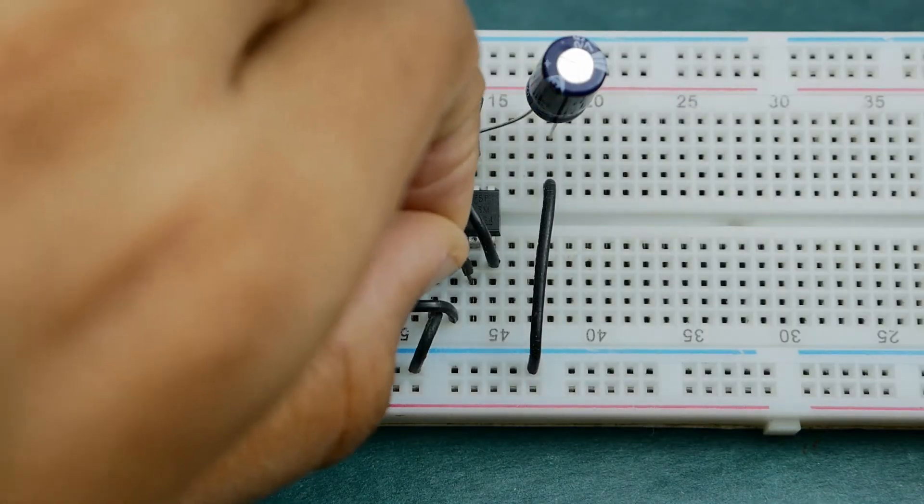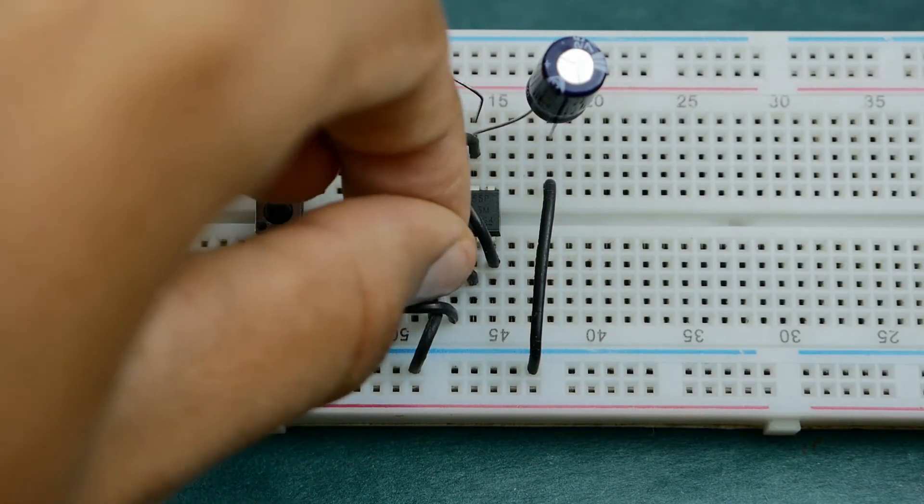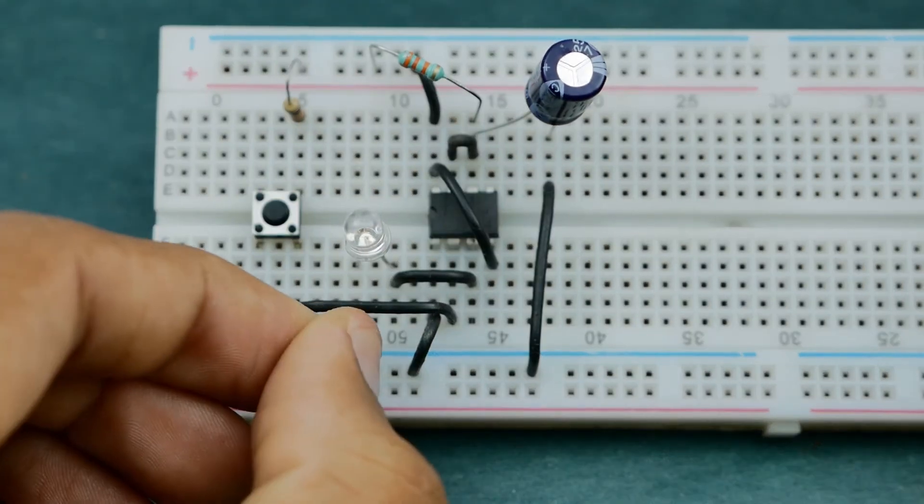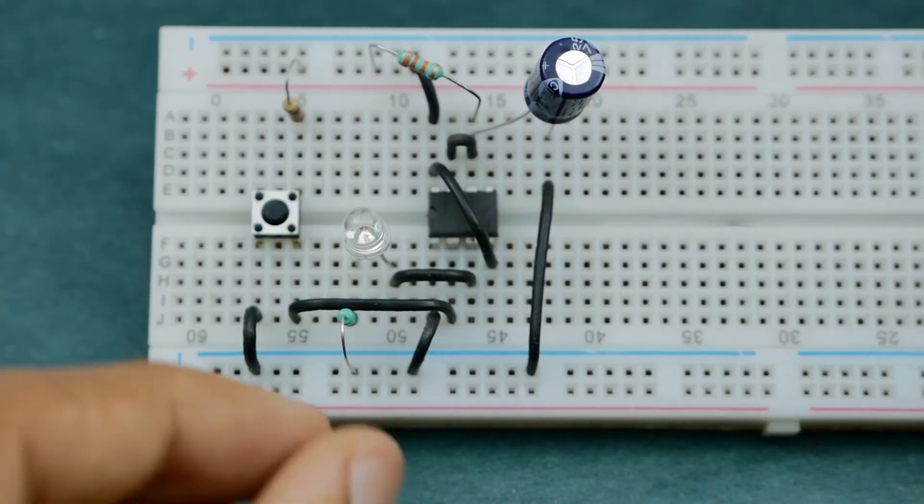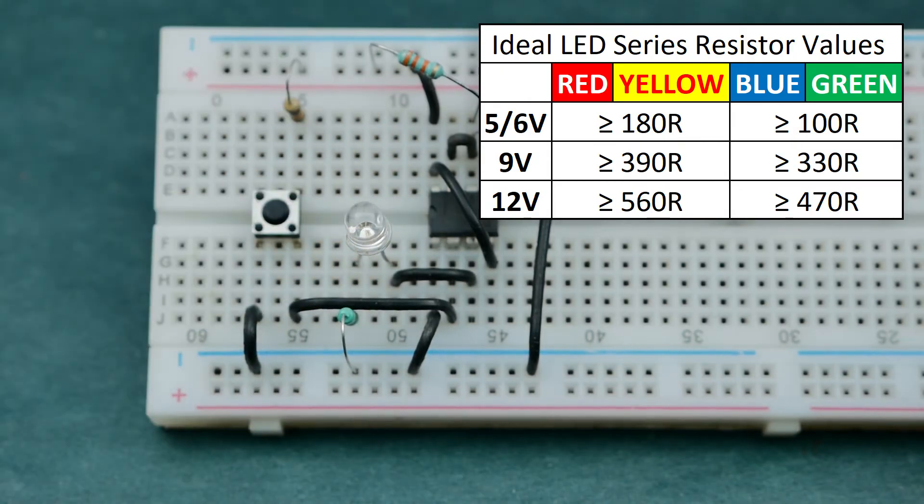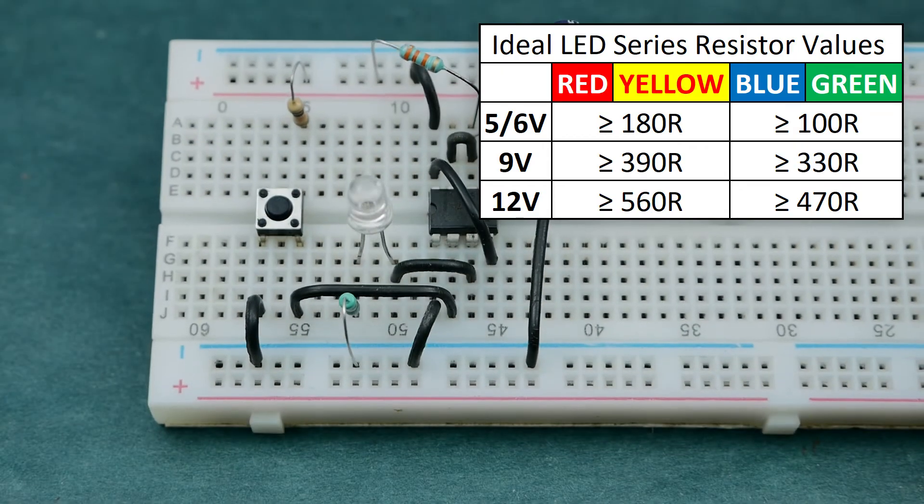Now extend pin 3 of the 555 timer IC, connect anode of the LED to this extended row and cathode to the negative rail via a 220 ohm resistor. And please refer to this table for the exact value of LED series resistor to use.